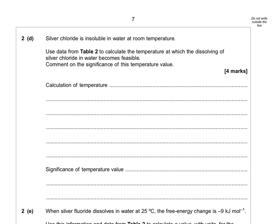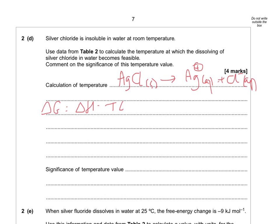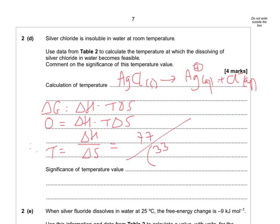Silver chloride is insoluble in water at room temperature. Use data from table 2 to calculate the temperature at which dissolving of silver chloride in water becomes feasible, and comment on the significance of this temperature. We're using ΔG = ΔH − TΔS. For it to become feasible, ΔG = 0, so T = ΔH/ΔS. That equals 77 divided by (33/1000), because we need our units to match. That equals 2333 K. The significance is that it's way above the boiling point of water — so if we reached that temperature for silver chloride to dissolve, all the water would have evaporated anyway.